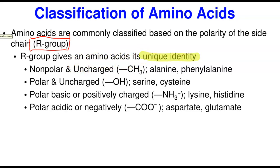First, we have the nonpolar and uncharged. These have a nonpolar side chain that is not charged — if you prefer, you can say neutral. For example, if the side chain ends with a methyl group, that is a nonpolar side chain, so we say it is a nonpolar and uncharged amino acid. Examples are alanine and phenylalanine, whose aromatic group is very nonpolar.